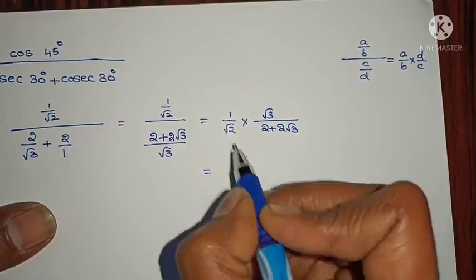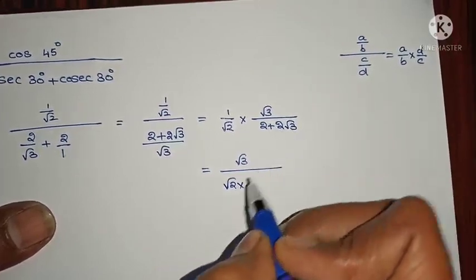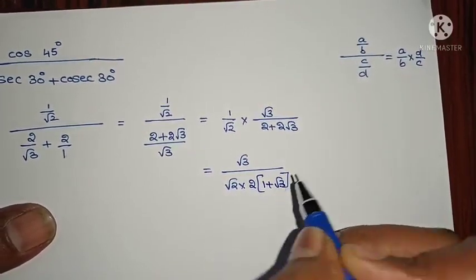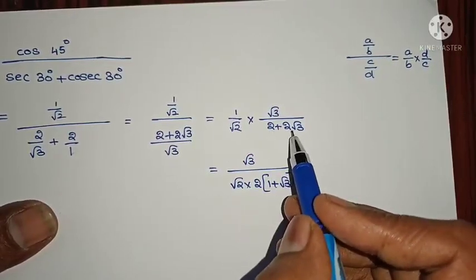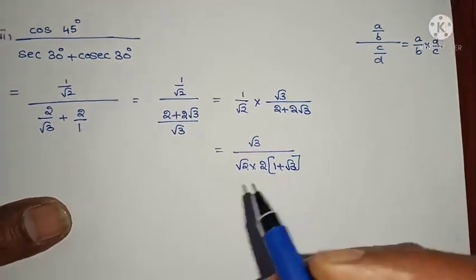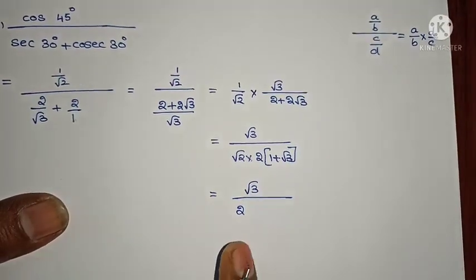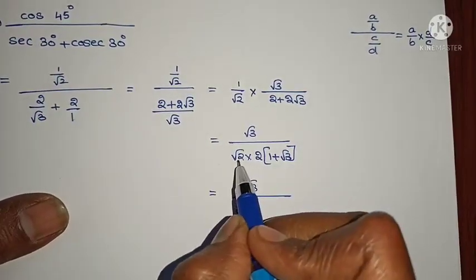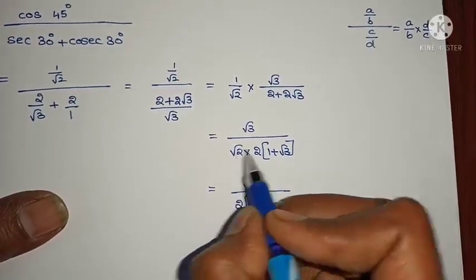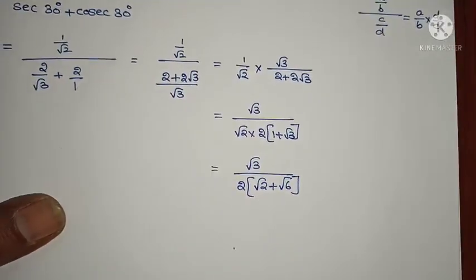1 into √3 is √3, divided by √2 into — taking 2 as common — (1 + √3). So we get √3 divided by √2 × 2(1 + √3). Now there's a √2 in the denominator, so multiply with √2: √2 × 1 = √2 and √2 × √3 = √6. We get √3 over √2(2 + 2√3), and multiplying gives root 3 over (√2 + √6).